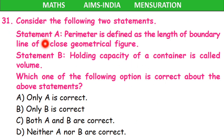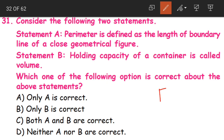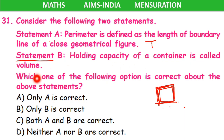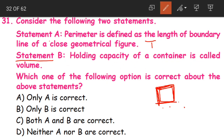Question 31. Again we have to consider two statements. Statement A: perimeter is defined as the length of the boundary line of a closed geometrical figure. So statement A is true. Coming to statement B: holding capacity of a container is called volume. Even statement B is true — capacity is measured in volume. The capacity of containers is measured in terms of volume. Both statements A and B are correct. That is option C.